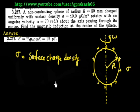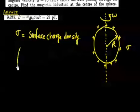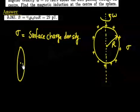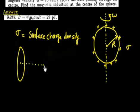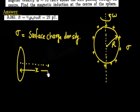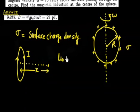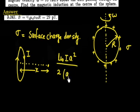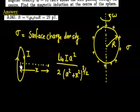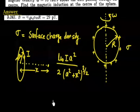We will use this result: if you have a circle with a point at distance x from the center, and the loop carries current I, the magnetic field at that point is given by μ₀IA² divided by 2 times (A² + x²) raised to the power 3/2. This is the formula we will use.